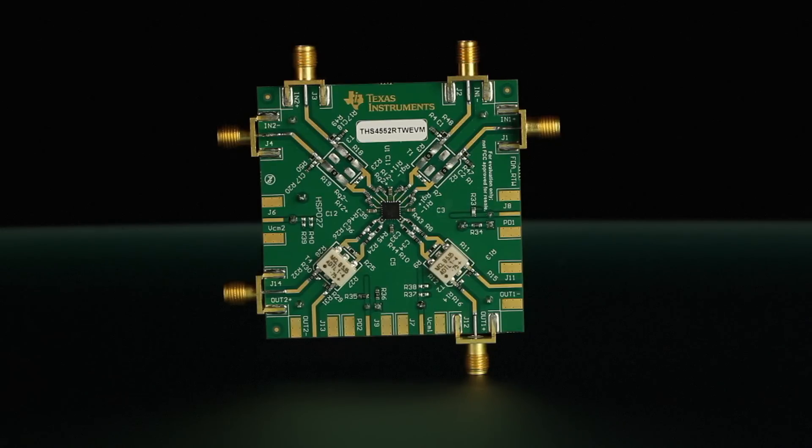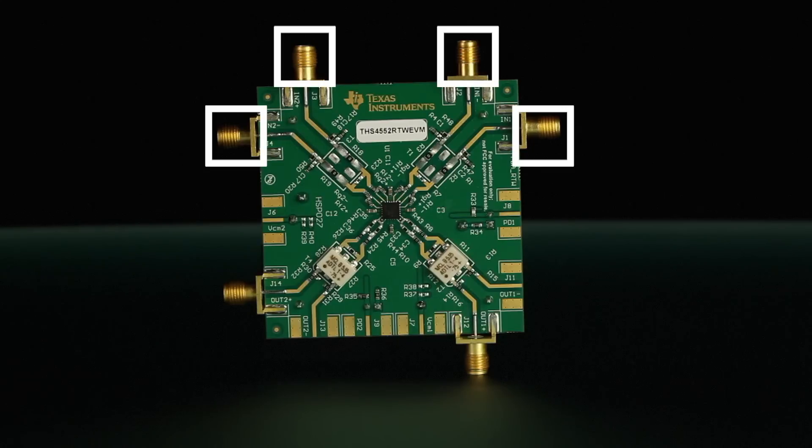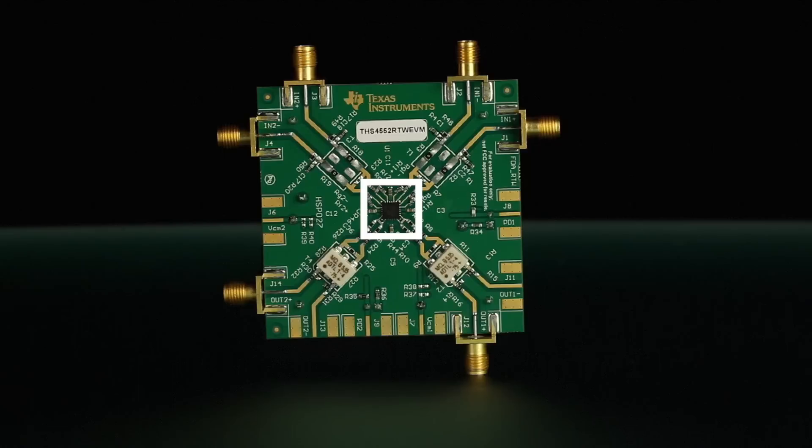The EVM consists of a single small circuit board shown here. The top side of the board features four input signal SMA connectors, the THS4552 amplifier, a differential to single-ended transformer or balance circuit, and two output signal SMA connectors.